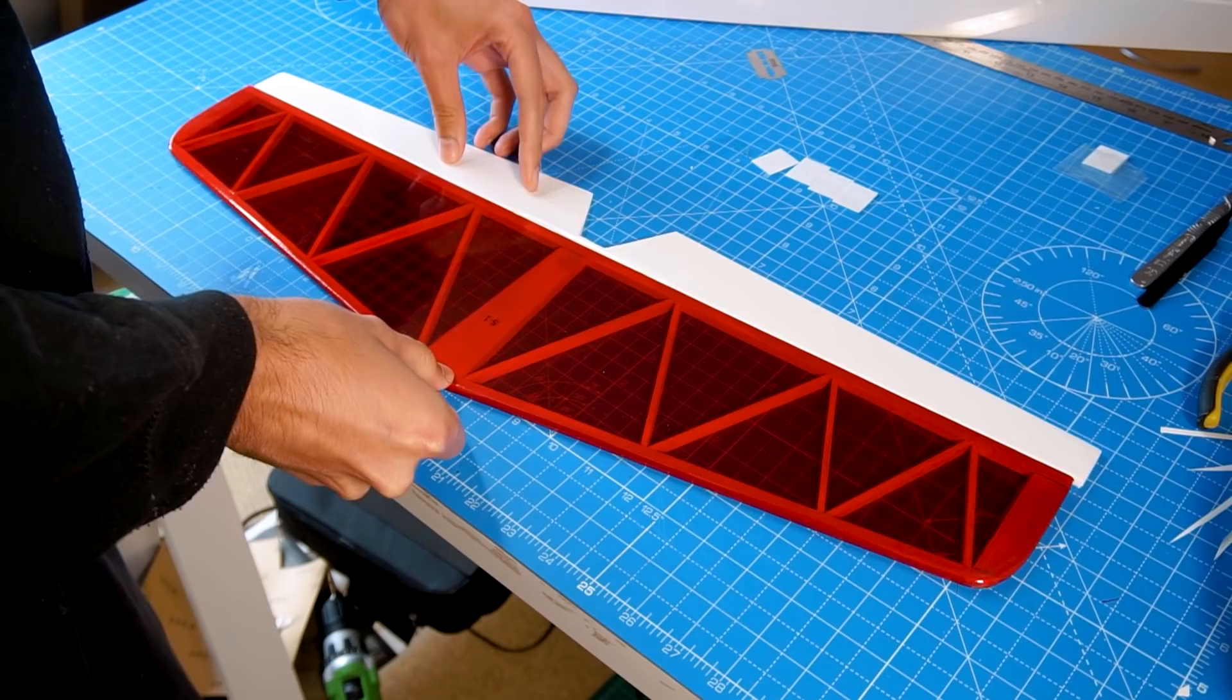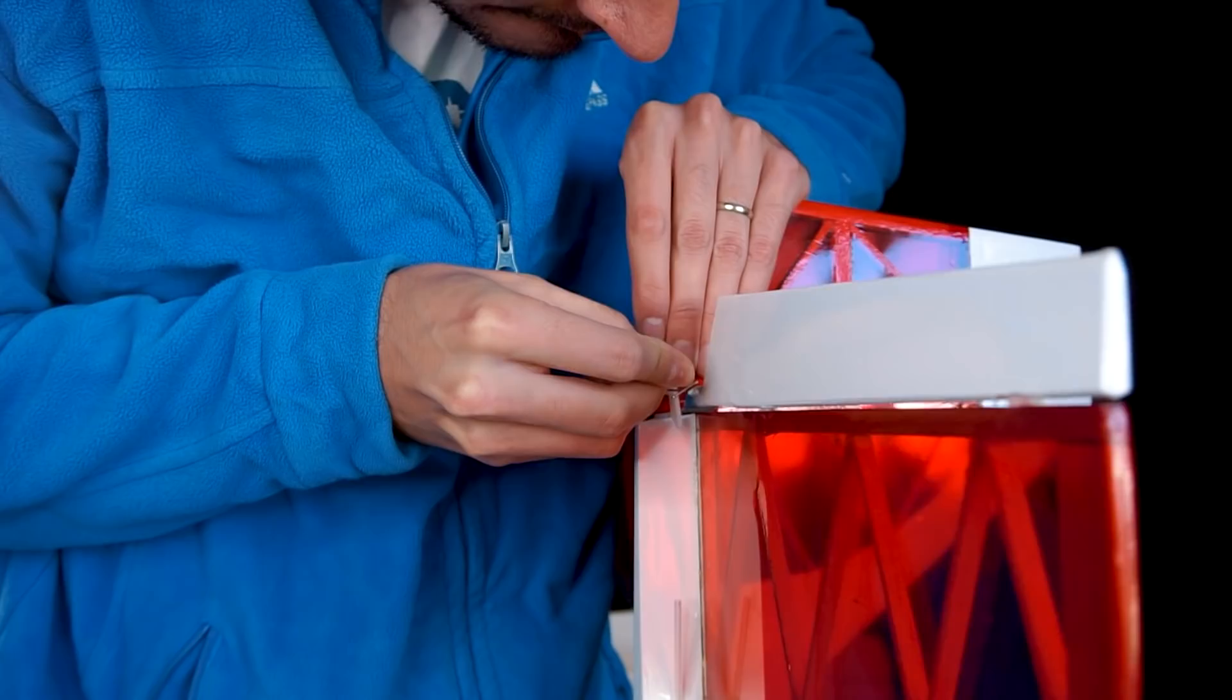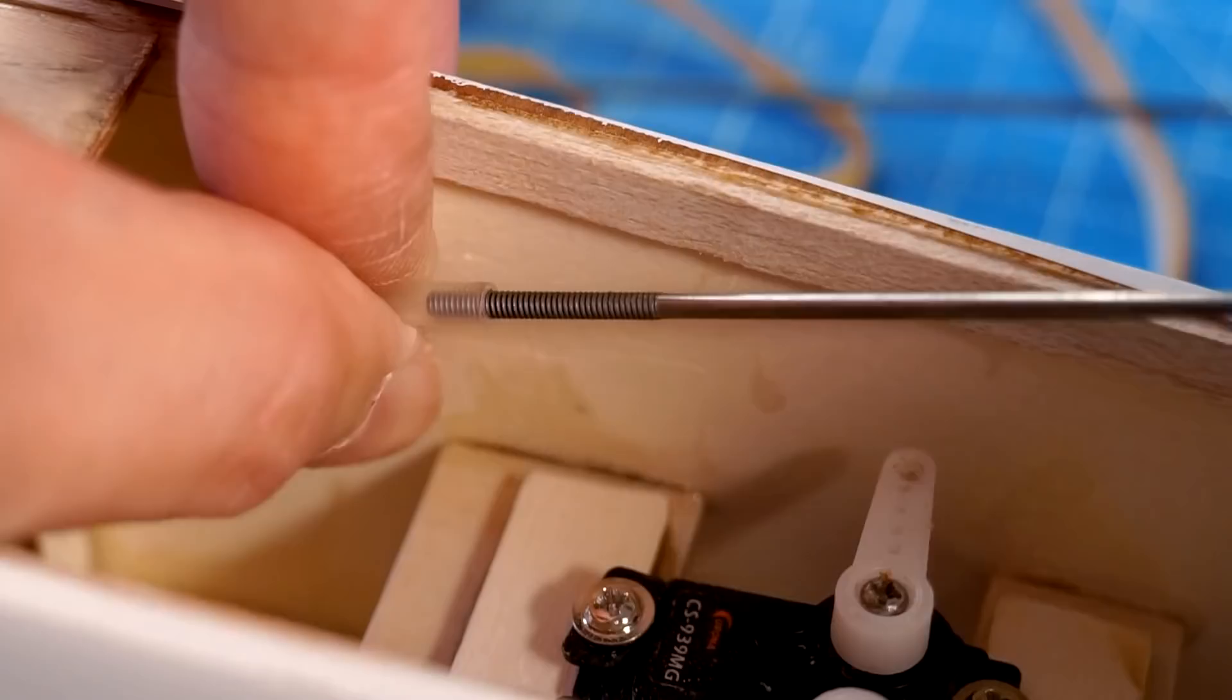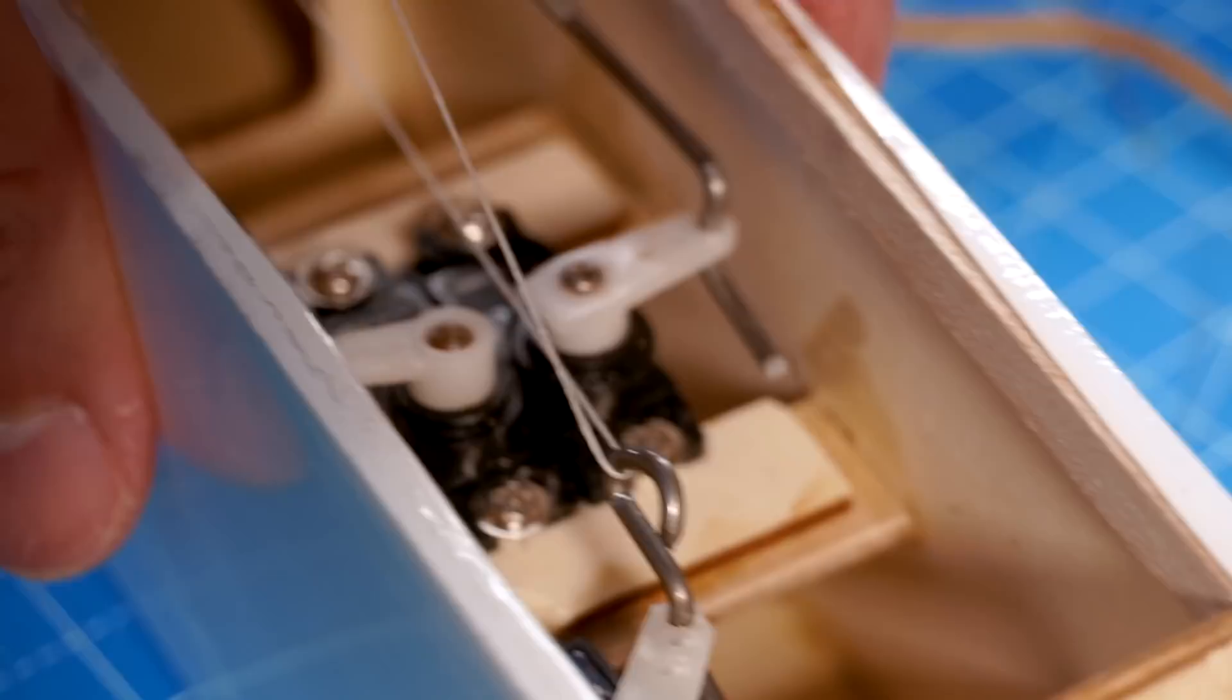We are nearly there. I'm going to put the control horns on the elevator and rudder, connect the push rods and adjust them, and adjust the length of the strings that will control the spoilers. This is being controlled by one servo.